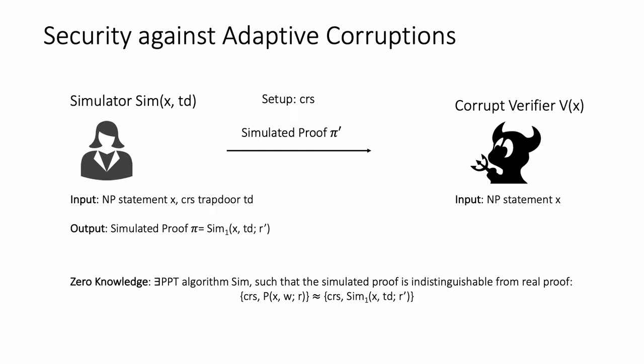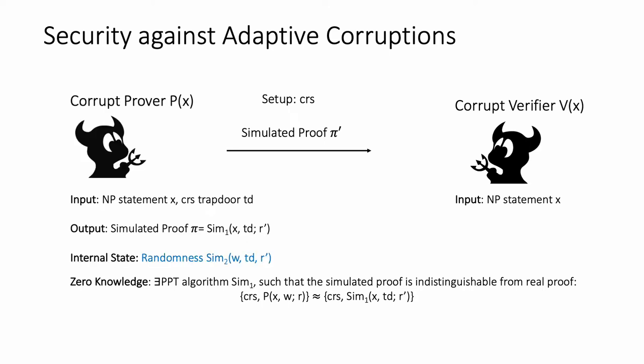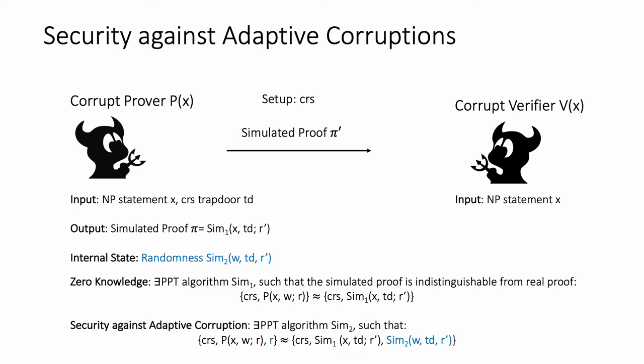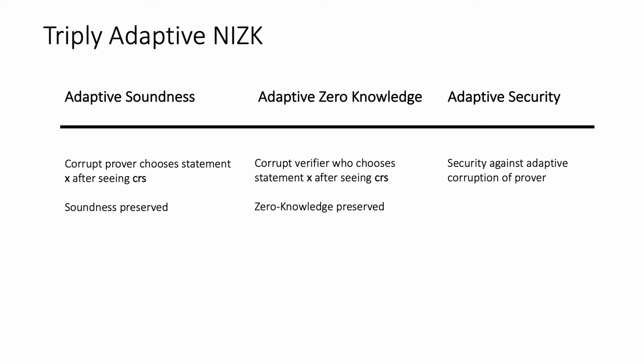Next we consider the setting where the prover can get adaptively corrupted after the protocol execution. Here we again start with a simulator who is given the trapdoor for the CRS and produces a simulated proof indistinguishable from an honestly generated proof. The simulator is then given the witness of the prover once the prover gets adaptively corrupted. The simulator must produce the randomness that was used to generate the proof such that the proof looks consistent with the witness, following the honest prover algorithm, to an adversarial verifier. Security under adaptive corruptions says that the simulated proof, the witness, and the randomness should be consistent and indistinguishable from a real one.